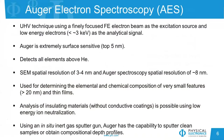Looking at the Auger technique, this is a UHV technique where we're using a finely focused field emission electron beam as the excitation source, and we're analyzing very low energy electrons coming from that as the analytical signal, typically less than 3 kV in energy. Auger is extremely surface sensitive, coming from the top 5 nanometers or so, and it detects all elements above helium. The spatial resolution in the SEM mode on the 710 is 3 to 4 nanometers, whereas in the Auger electron spectroscopy mode we're looking at about 8 nanometers spatial resolution.